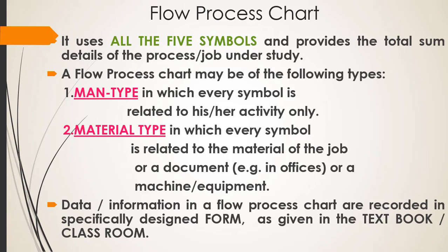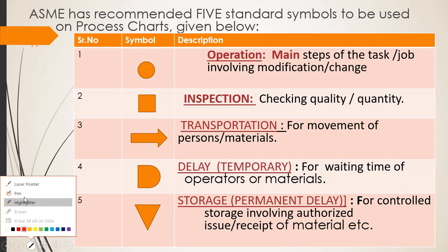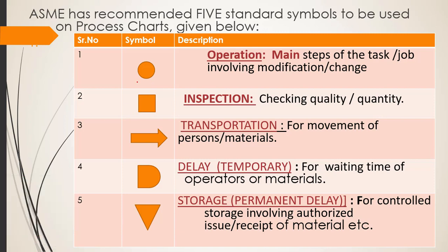Flow process chart is used to record various operations. There are five symbols used in it. The first symbol is operation, which is shown with a circle. Operation includes any task, job, or activity described with the symbol of a circle.